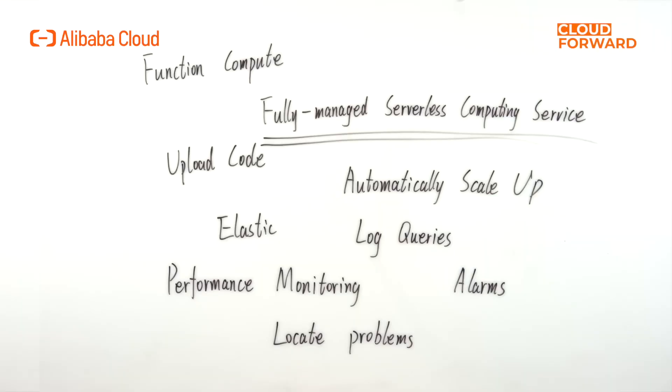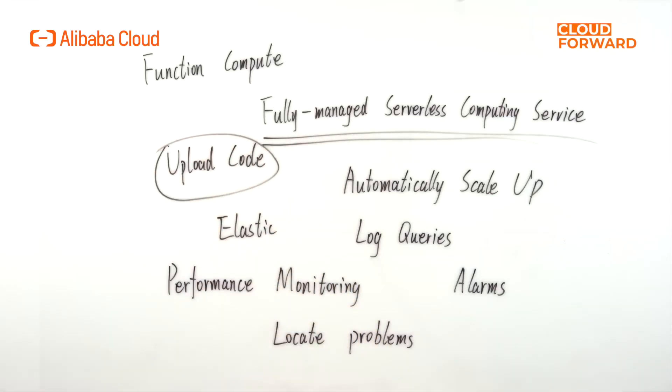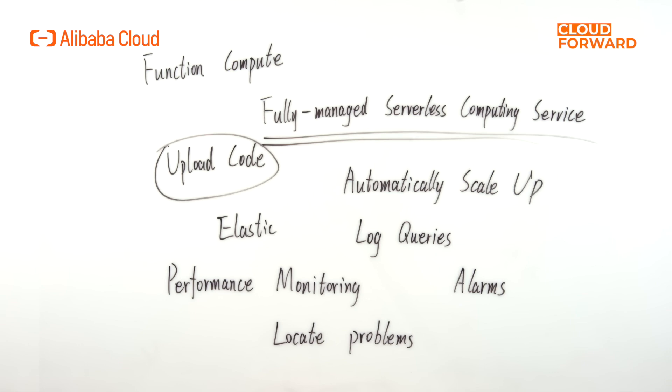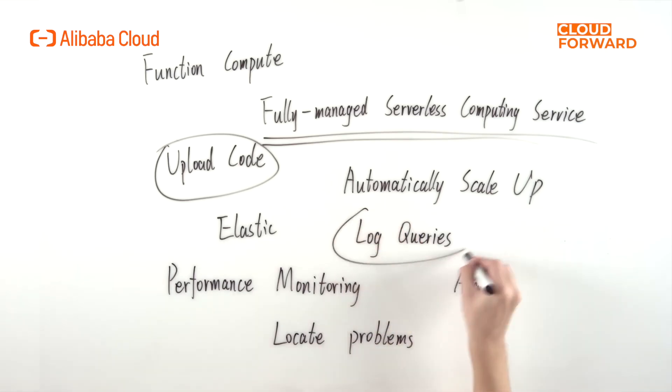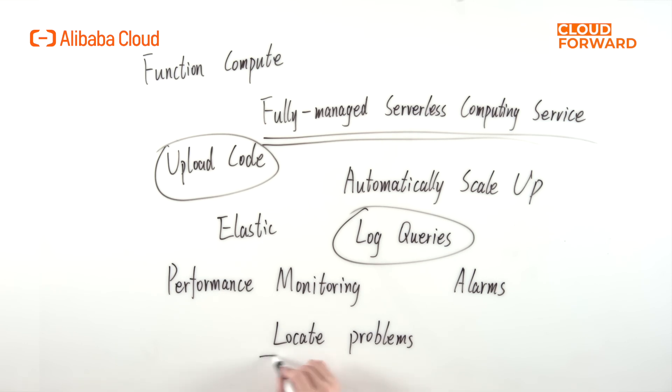Under the Function Compute architecture, developers only need to focus on coding and uploading the code to Function Compute, which means application deployment. When high concurrency requests come in, developers don't need to manually scale up. Function Compute will automatically scale up in milliseconds based on the request volume, run tasks elastically and reliably, and provide built-in functions such as log queries, performance monitoring and alarms to help developers detect and locate problems.